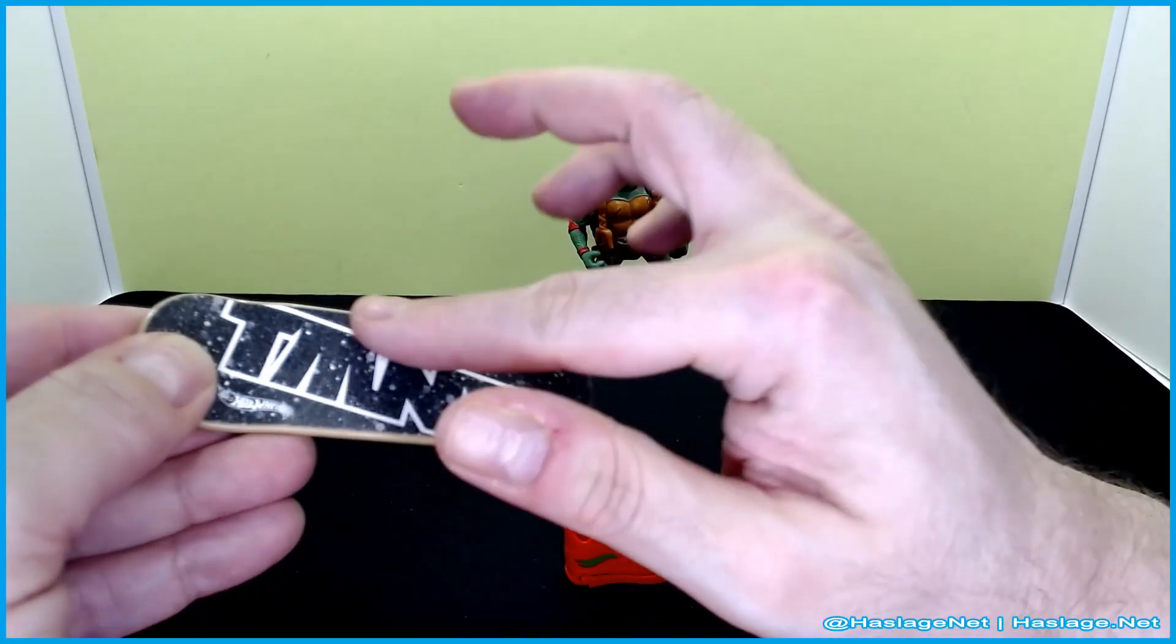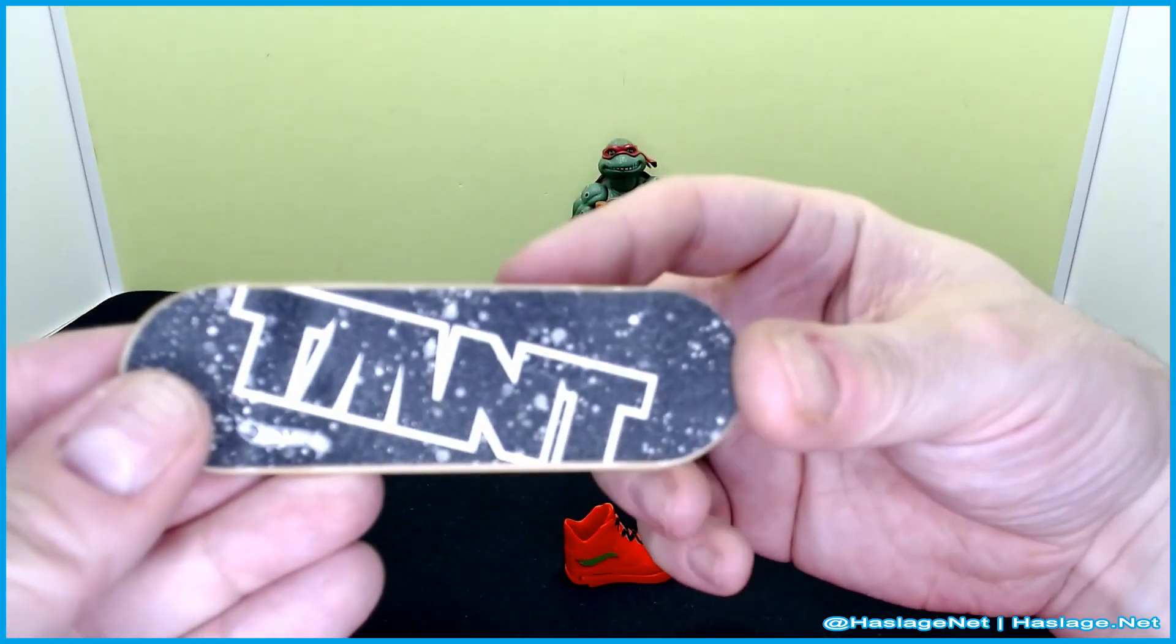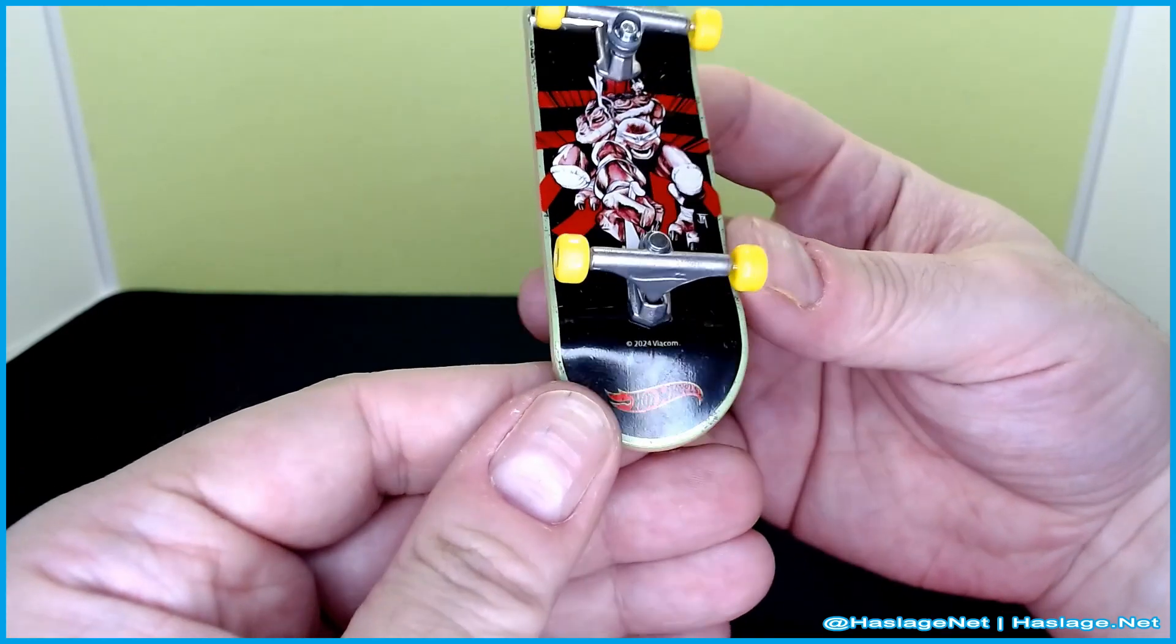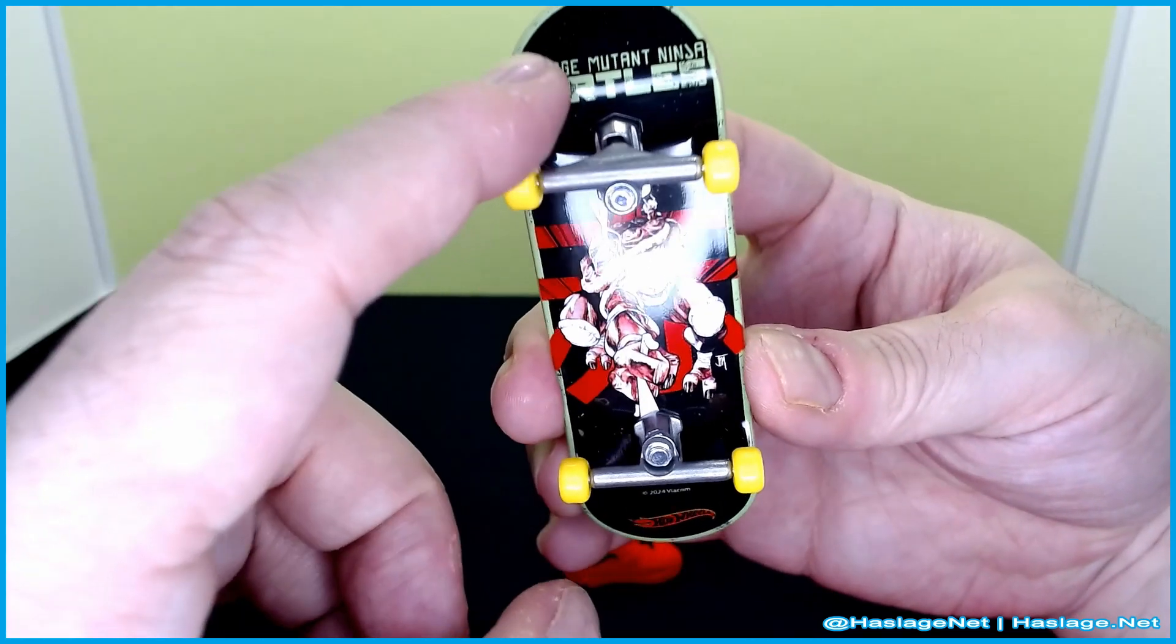Anyway, the board TMNT, it has that sandpaper feeling on it so it has like friction. Then of course underneath it has Raphael from the comic book, Hot Wheels branding, Teenage Mutant Ninja Turtles. Really really nice there.